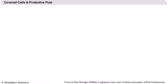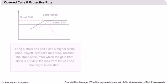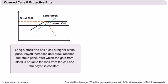Let us analyze the payoff from a covered call strategy. In this strategy, we long a stock and short a call at the same time, which reduces our initial outlay. If the price decreases, the call expires worthless and some of the loss from the stock is compensated by the gain from the call premium. When the price rises, the increase in stock price is offset by the loss from the call, and the payoff remains constant.